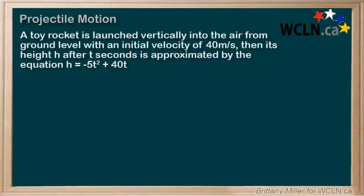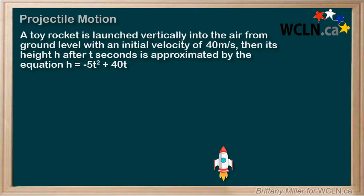Let's look at the following example. A toy rocket is launched vertically into the air from ground level with an initial velocity of 40 meters per second. Then, its height h after t seconds is approximated by the equation h = -5t² + 40t.